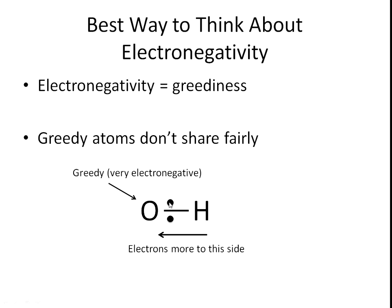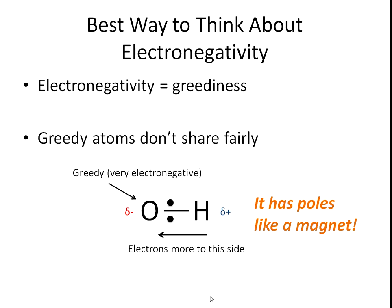So the electrons are going to be closer to the oxygen, and this makes the oxygen side slightly negative. If that side is slightly negative, then the hydrogen is obviously going to be slightly positive. So we've got a negative side and a positive side to this structure — that's a bit like a magnet when you think about it. It has poles. That's why we call it a polar bond: it has poles.